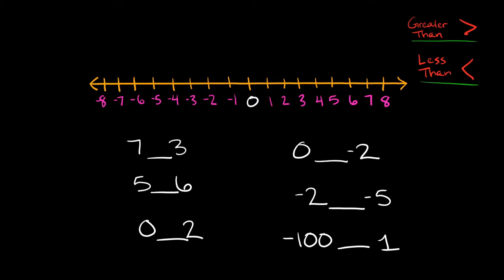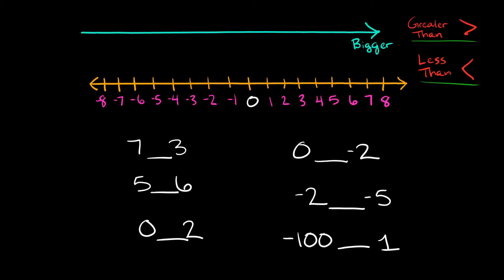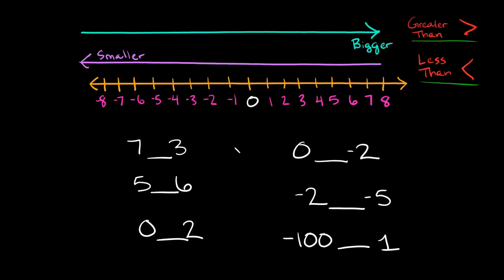The basic concept you need to understand about the number line is: when we move to the right, numbers are getting bigger. It does not matter where you are on the number line — when you move to the right, numbers are getting bigger. The same applies when we move to the left: numbers are always getting smaller. That's true regardless of where you are on the number line. So with that in mind, let's jump into some of these inequality examples.